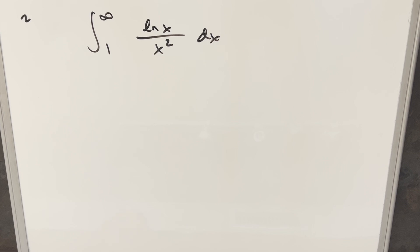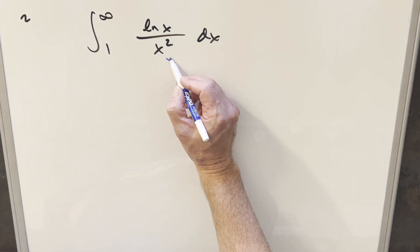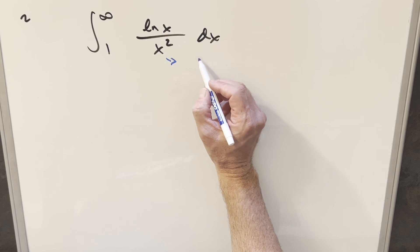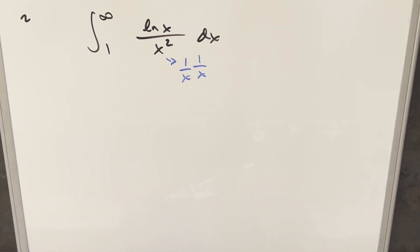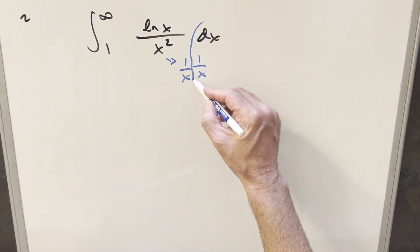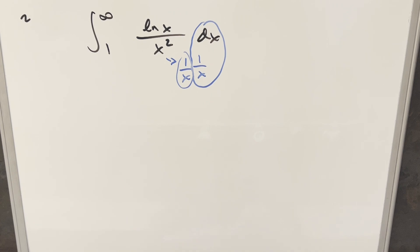For this one I have a slight alternative method, a minor change. To get started, what I want to notice: the derivative of natural log x is 1 over x. So if I take this x squared and look at it as 1 over x times 1 over x, we can group one of these with the dx to set up a u substitution, and then we just need a value for the other one.